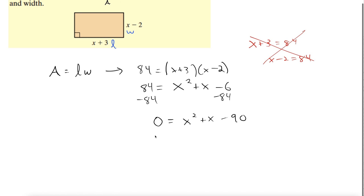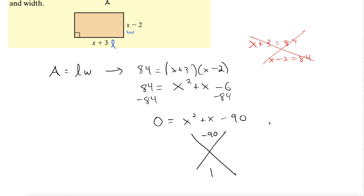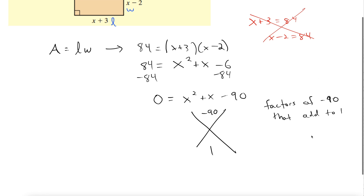So now we have something we can factor. Let's factor this. We have c is negative 90 and b is 1, so we want factors of negative 90 that add to 1. When we have a small number like 1 or 2 for b and a negative c, the factors are usually going to be close to each other. So instead of starting with 1 and 90 and working in, since b is small, I'm going to start with numbers closest to each other — something like 9 times 10.